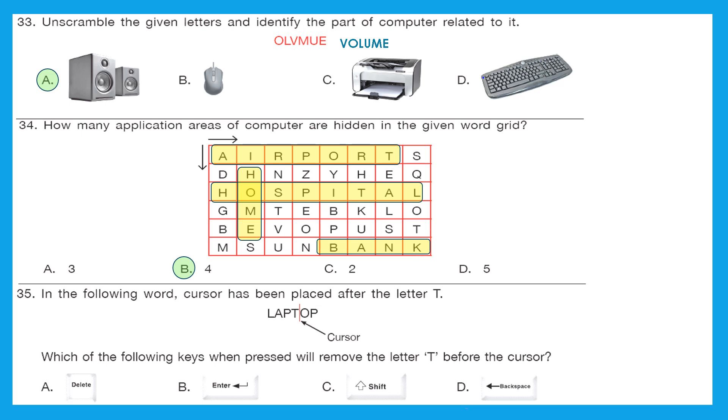Question 35: In the following word, cursor has been placed after the letter T. So you can see the cursor and it is mentioned like it is shown here with a red line and it is just after T. Which of the following keys when pressed will remove the letter T before the cursor. So now if we have to remove anything, erase anything from the left of the cursor. Can you recall which key we press? We press backspace key. Yes. If we will press backspace key, it will erase the letter left to the cursor.